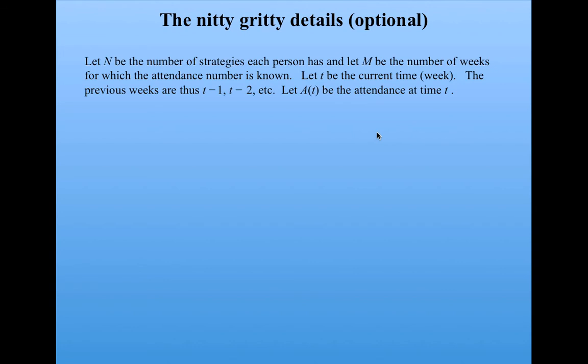Here are the details. We're going to let N be the number of strategies each person has, and M be the number of weeks for which the attendance is known. Let T be the current time, which is the current Thursday that we're predicting the attendance for. The previous weeks are therefore T-1, T-2, etc. And we're going to denote the attendance at time T by capital A(T).